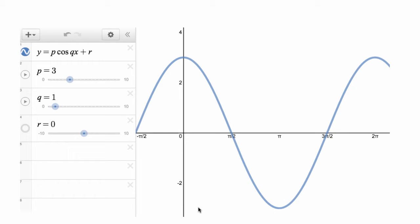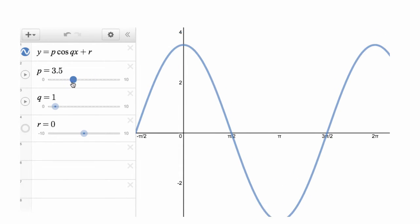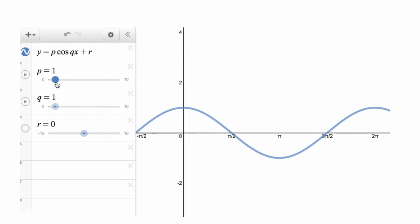And if we're faced with a graph like this and we're wanting to know what the amplitude is, we look at the maximum, in this case it's 3, and we look at the minimum, in this case it's minus 3. That's a gap of 6. Half of that's 3. The amplitude's half of the difference between the maximum and the minimum of the function.